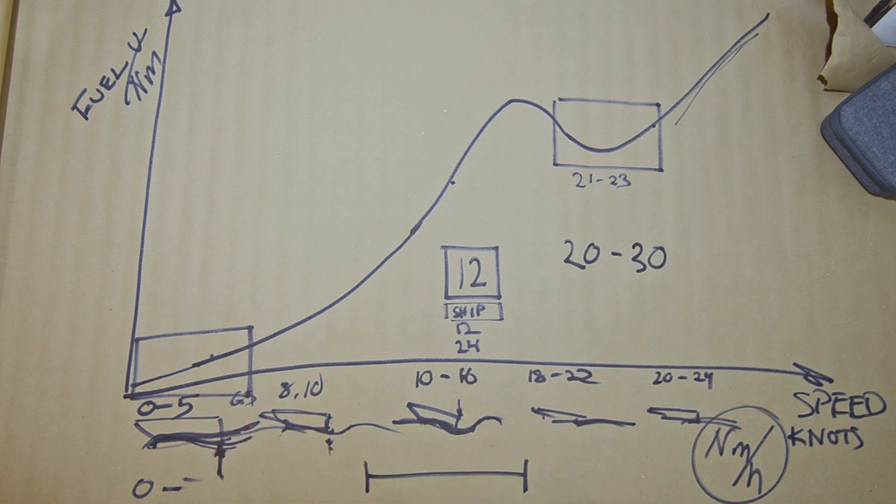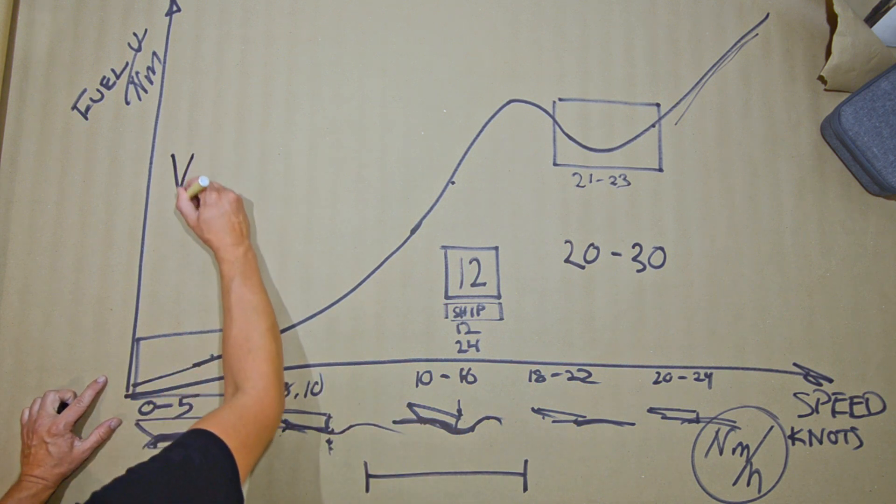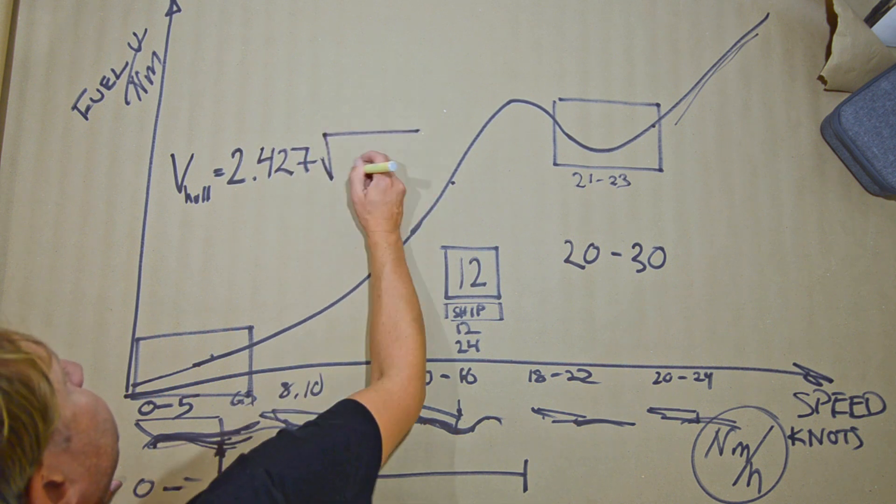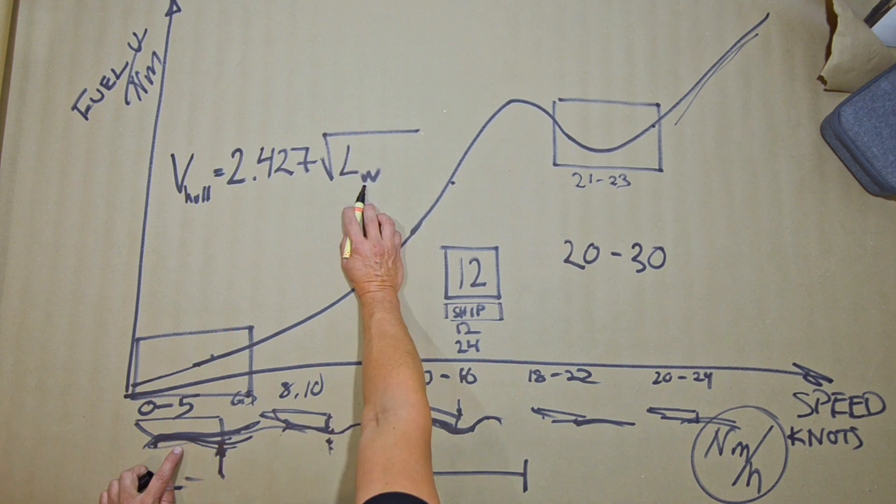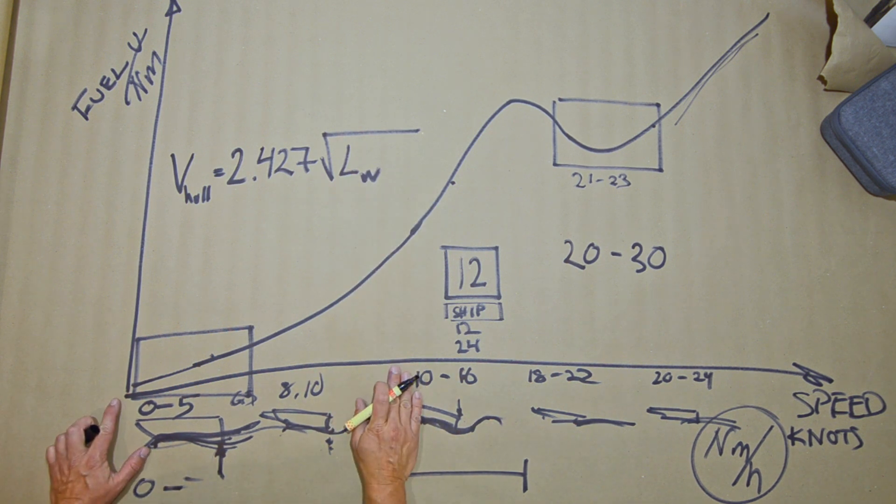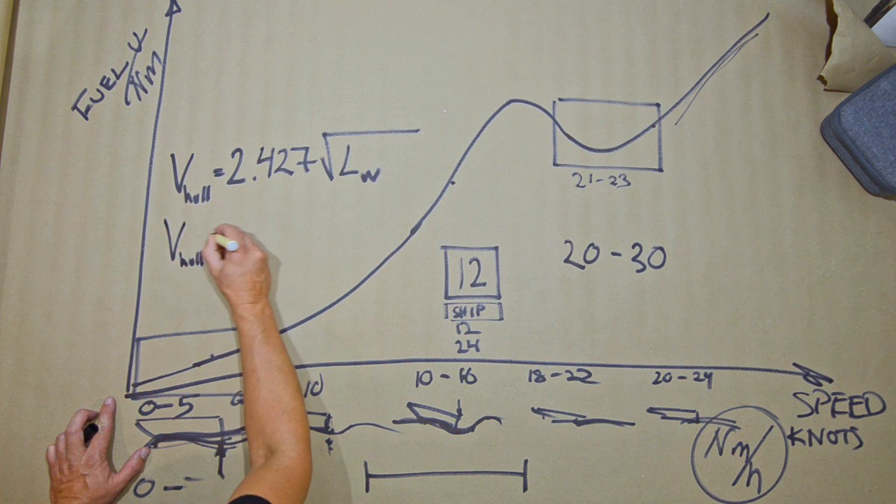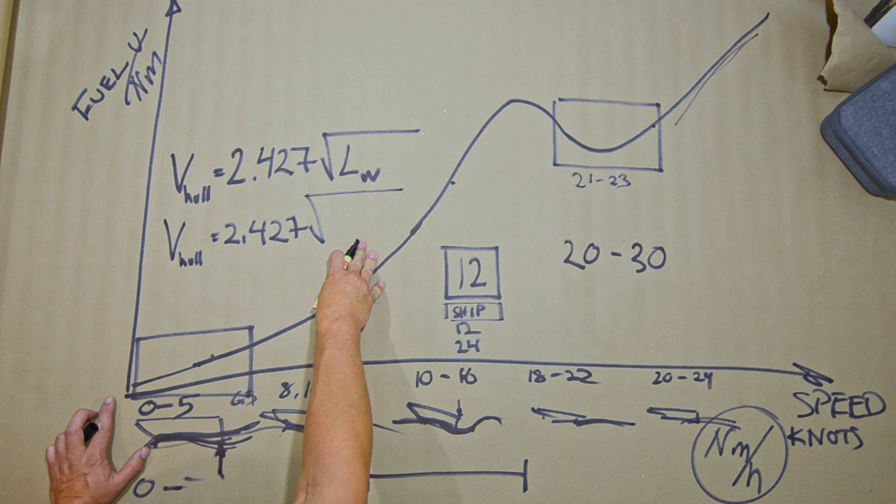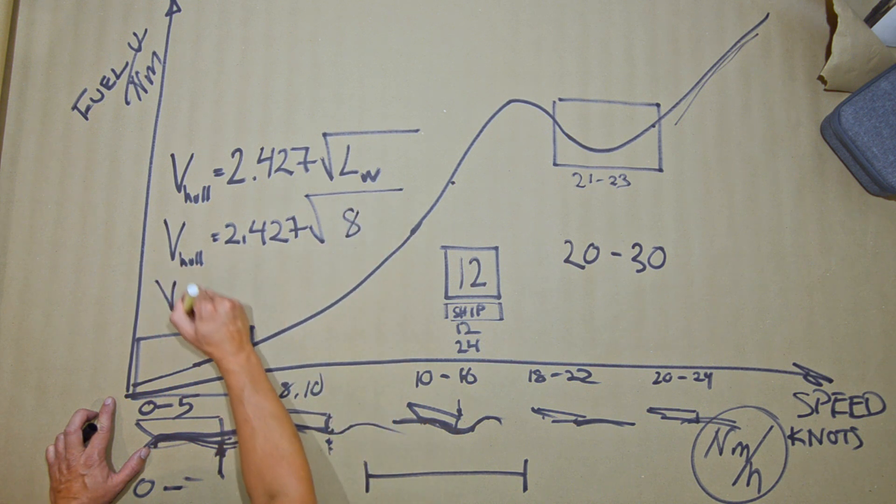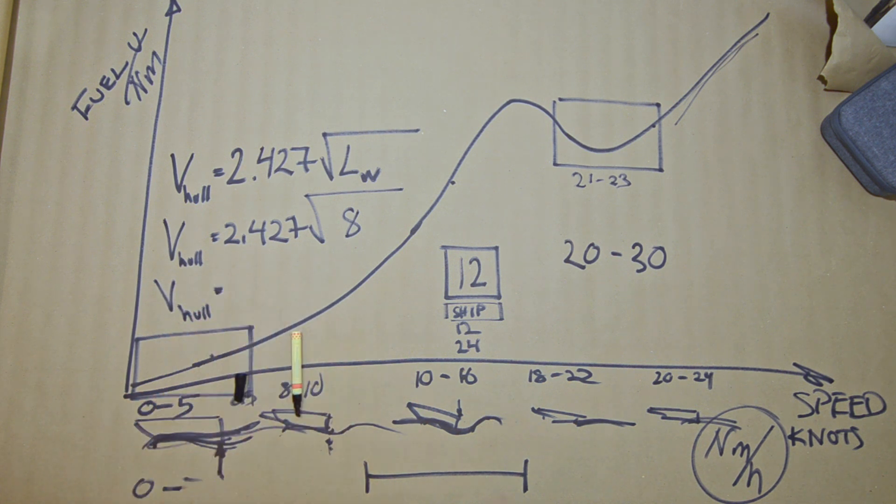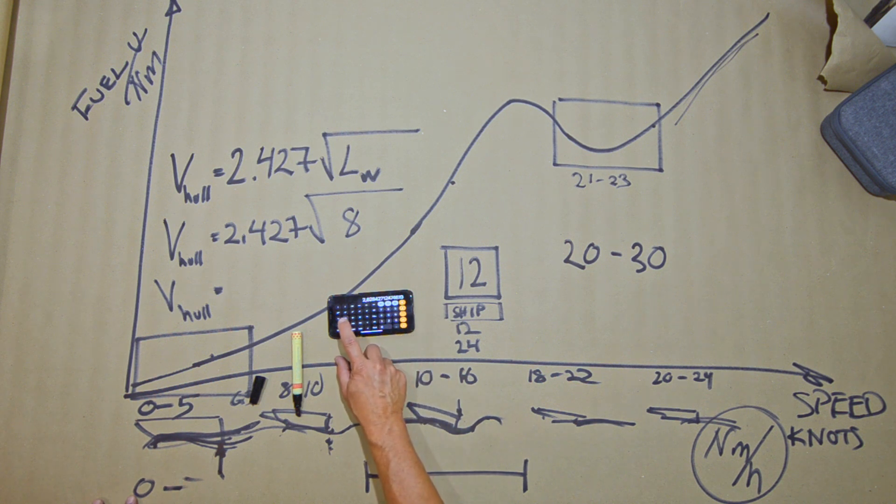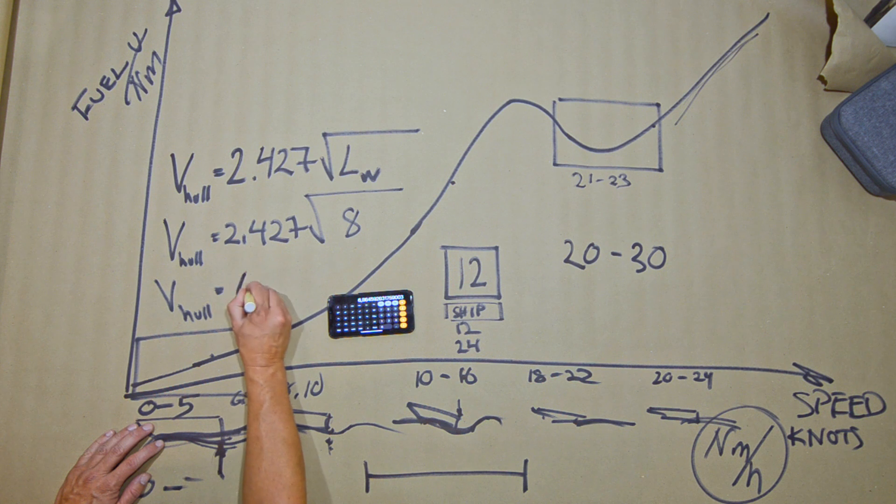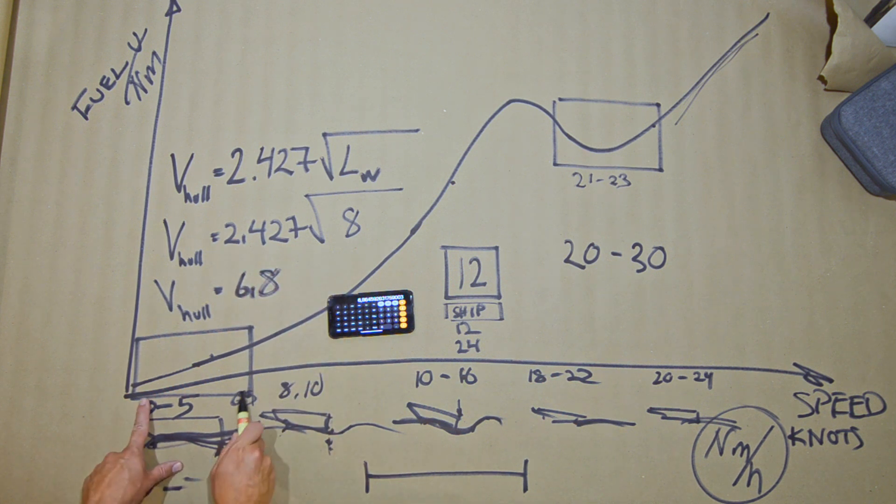So I'm going into the mathematics of it. There's a formula that says vhull equals 2.427 times square root of length of the water line. My boat is about, vhull for my boat equals 2.427 square root, let's say my boat has a wave length in the water line at 8 meters. So vhull equals 8 square root times 2.427, 6.8 knots.